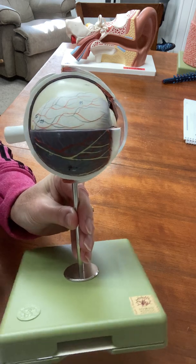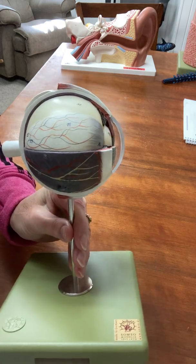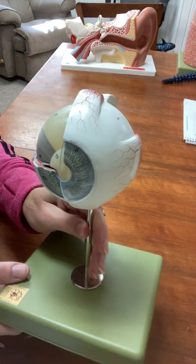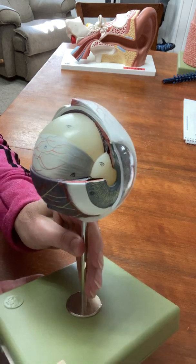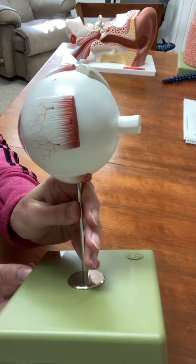Okay, so there are three layers to the eye and you can see the eye cut open on this side and then on this side it is not cut open.